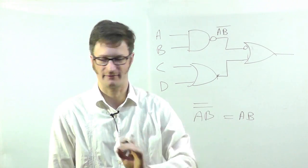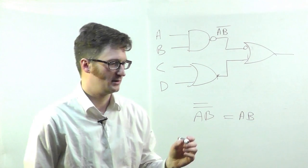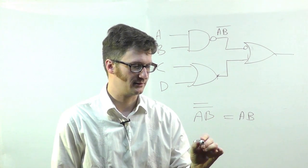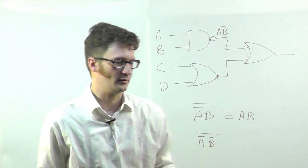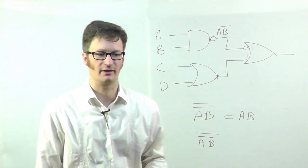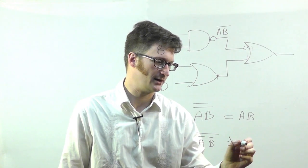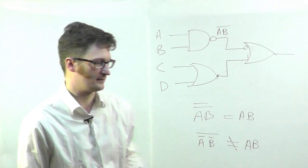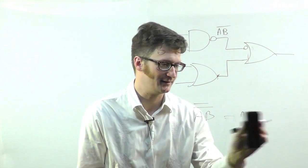Alright. So every pair of inversions you can get rid of. But you need to be careful. If I had this, where they're individually inverted, that is not equal to A B. Alright. Anyway, getting back to this.